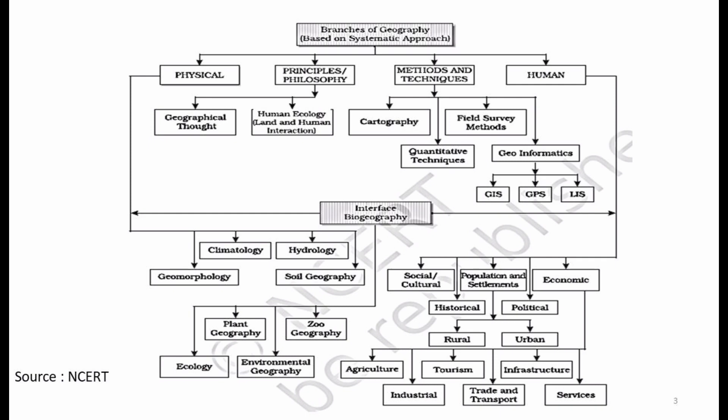Geomorphology takes its roots from geology and studies landforms and the Earth's surface. Climatology covers climatic aspects such as winds, pressure belts, air masses, and the regional classification of climate. Hydrology deals with water-related aspects of the Earth's surface, including rivers, lakes, ponds, oceans, and seas. Soil geography, as the name suggests, covers the types of soils, terminologies related to soil, and their regional distribution and division across the world.